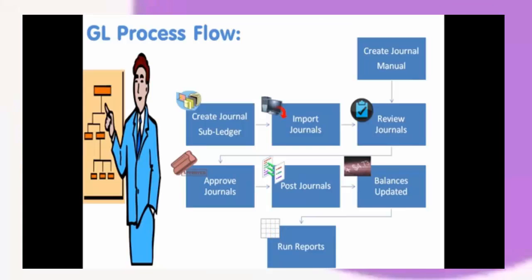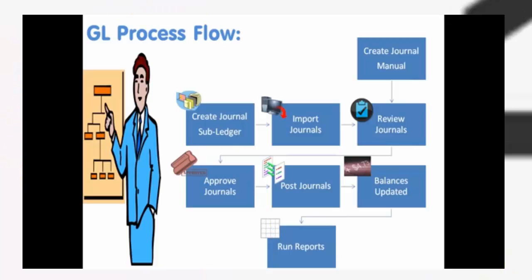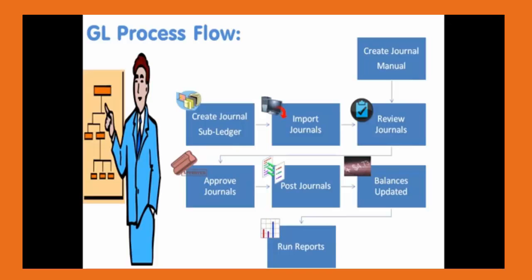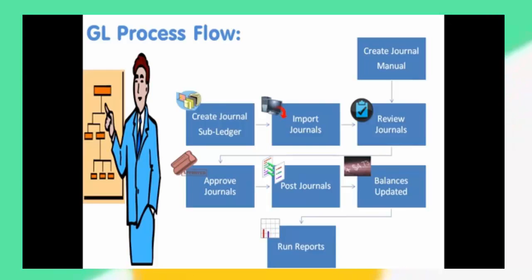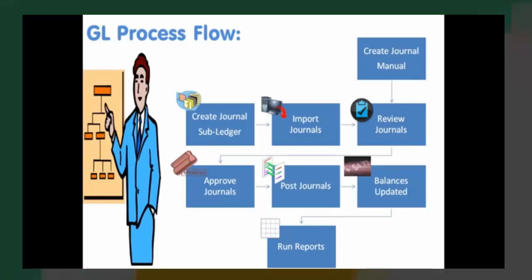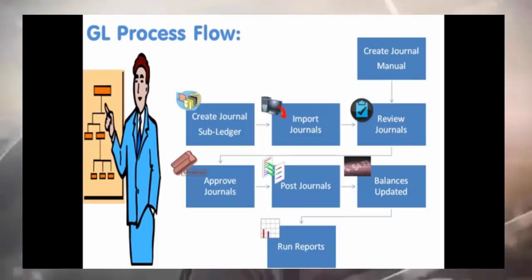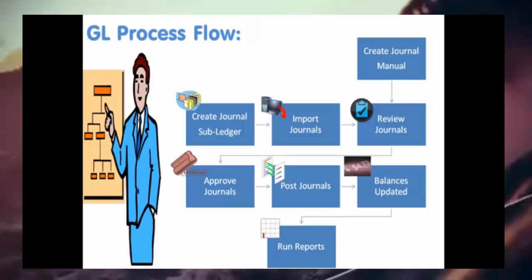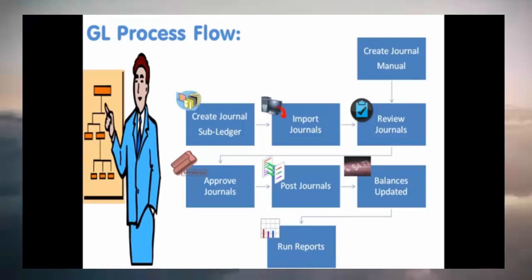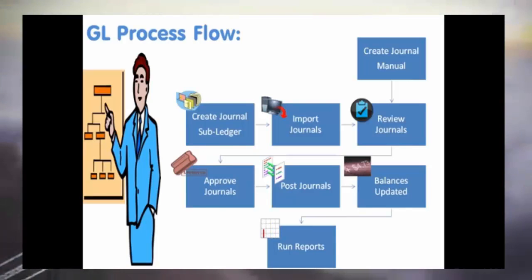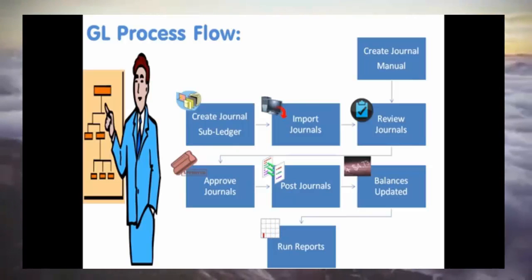Journal balances are updated — the posting process updates the journal balances and you can inquire the account balances in general ledger for all posted transactions. Run reports — general ledger has many built-in reports; the most common reports run from general ledger are the transactions register and trial balance report. This is a generic general ledger process; some systems may have slight variations, but the underlying concepts remain more or less the same.